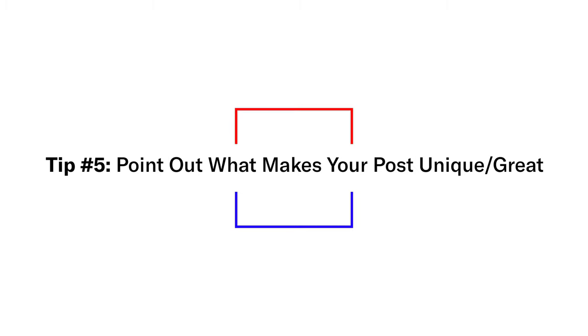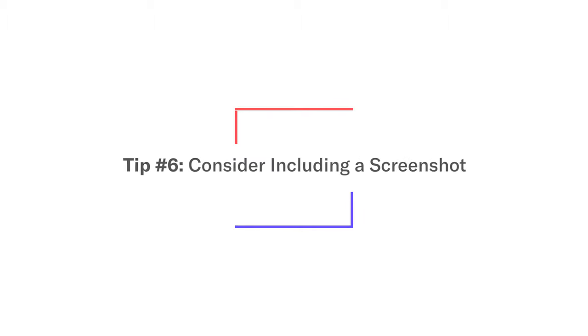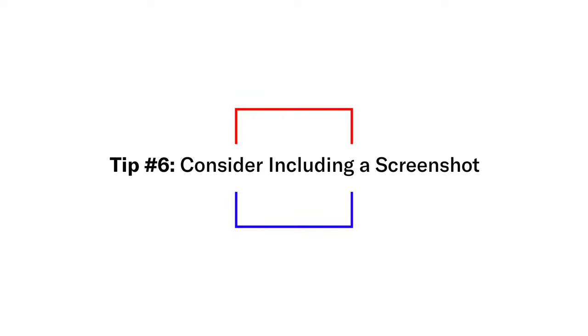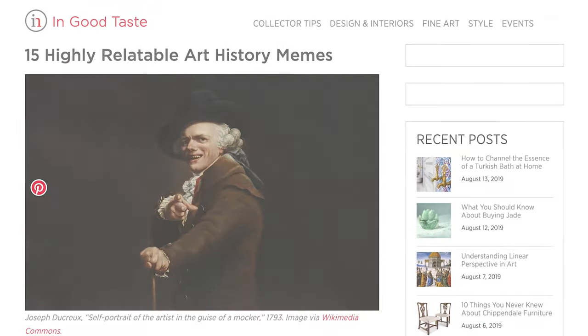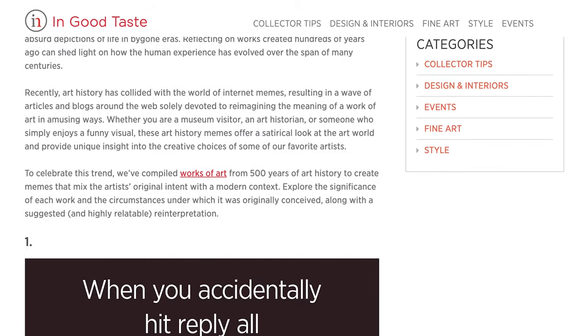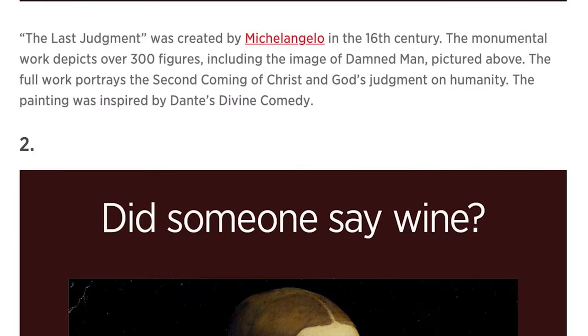Make sure you point out what makes your piece great. You're never going to be pitching the exact same thing, because no one's going to want to share something they've already covered on the same topic. This gets back to the ideation phase — you should always be thinking about how you're one-upping what's already out there. Whatever you did to one-up the competition, make sure you say that in your outreach email. Also consider including an image or a screenshot in your email — this works sometimes but not always. It makes more sense if the infographic is really impressive artwork. For example, a piece from Invaluable where they created art memes is something where showing a visual example will help hook the reader.